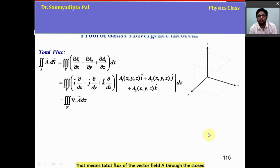And total volume integration of that is like this. That means total flux of the vector field A through the closed surface of the cube is equal to the total divergence of the vector field over the volume enclosed by the closed surface. So as we have seen the proof of Gauss's divergence theorem,